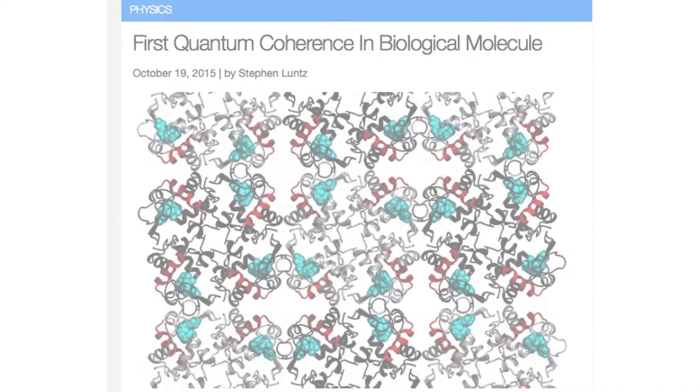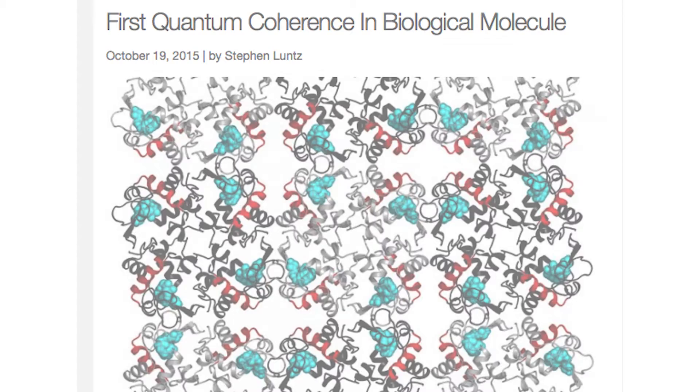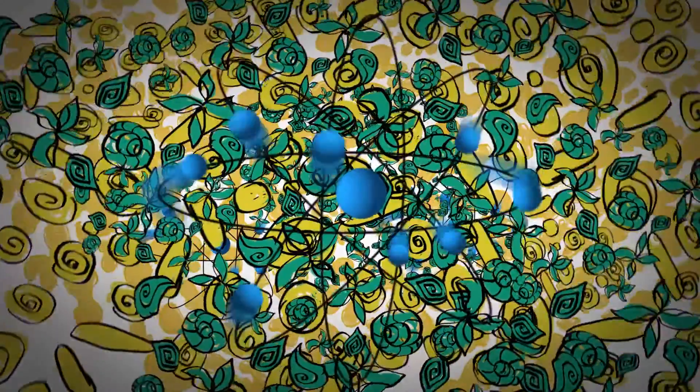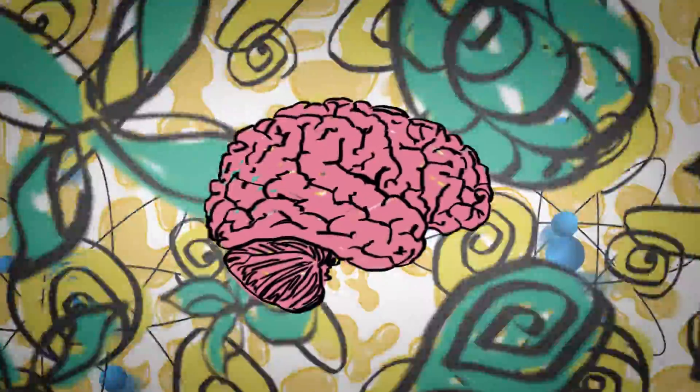Quantum brain theory holds that the brain is capable of sustaining macroscopic quantum coherence. So we are not only walking wave functions, we are walking quantum computers. This by itself does not solve the mind-body problem, because it doesn't tell us why those quantum computers would be conscious. But if true, it would allow us to project all the quantum weirdness going on at the subatomic level up to the whole brain.